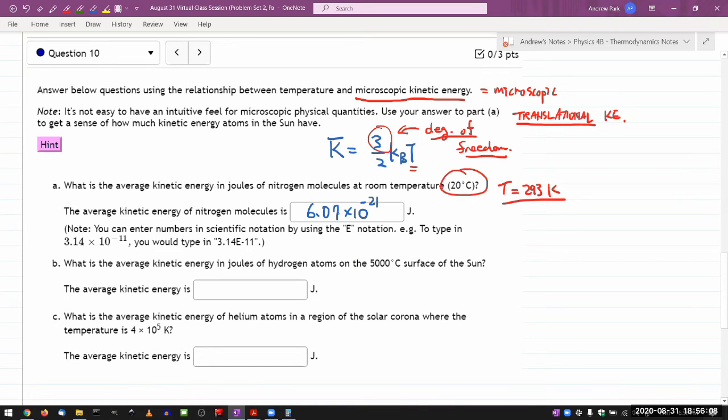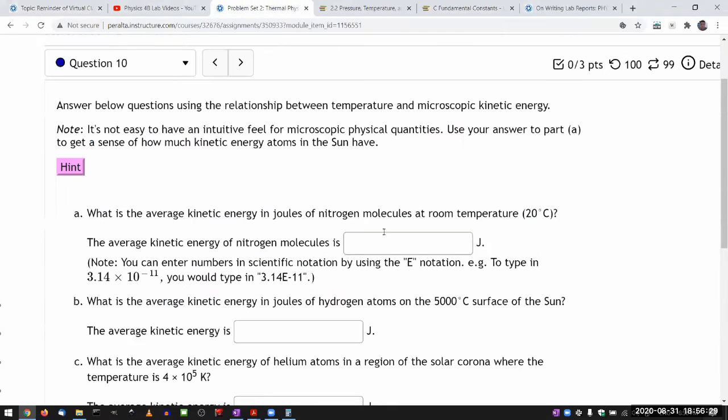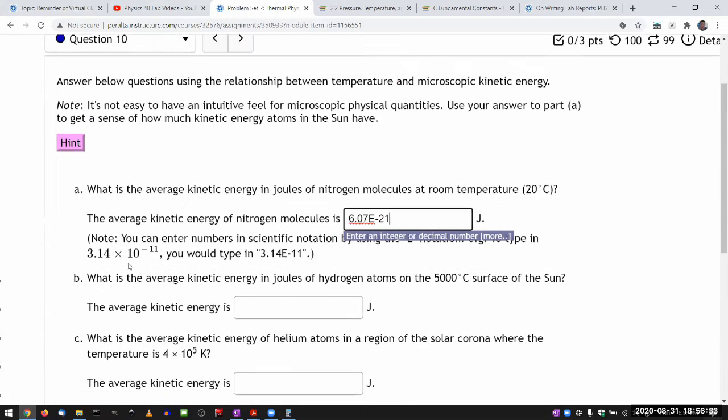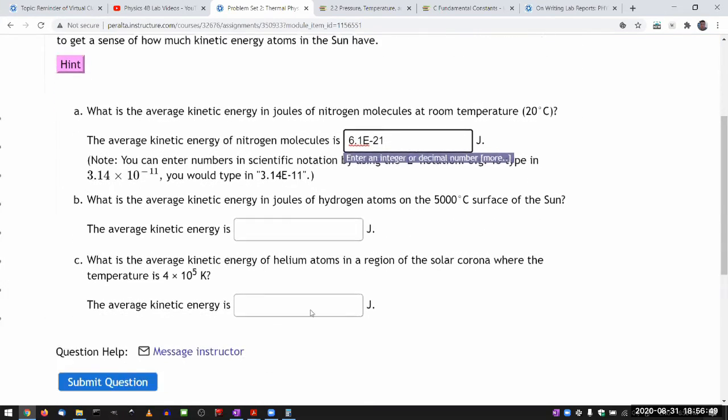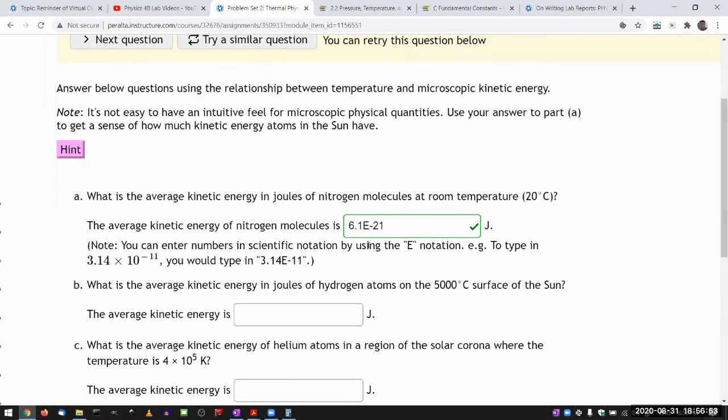In MyOpenMath, the easiest way to enter this would be 6.07 and using the E notation, E minus 21. This single letter E already means times 10 to the power of. Let me also demonstrate the tolerance thing. All the questions are coded with about 1% tolerance. If I rounded up to two significant figures, it will still grade it as correct. But if you want to ensure that your rounding error will always be less than 1%, you should use three significant figures.